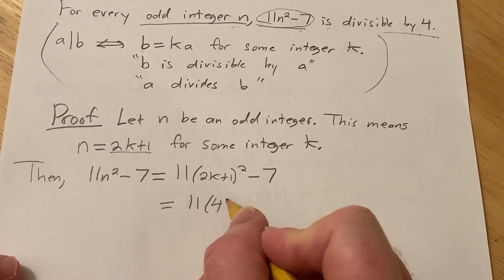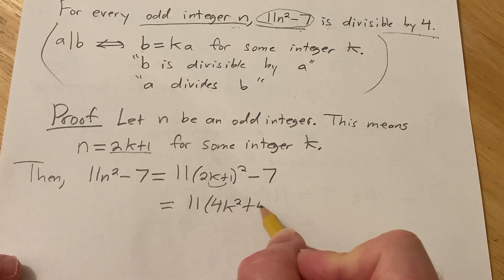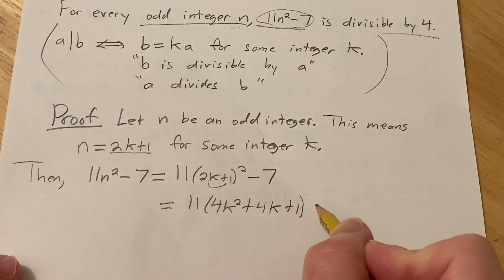you can multiply this out. You square this one, so you get 4k². You multiply these and double them. So 2k times 2 is 4k. And you square the last one, so 1² is 1. And then minus 7.